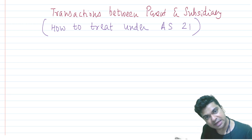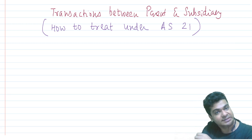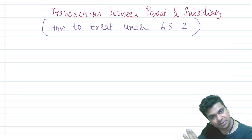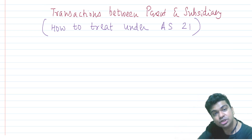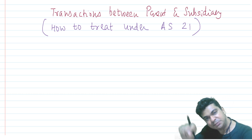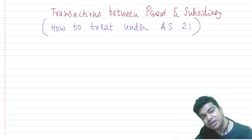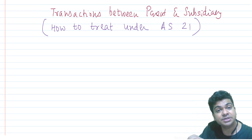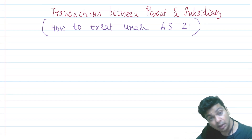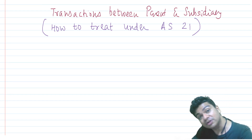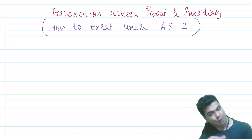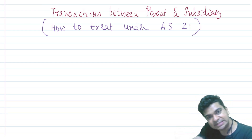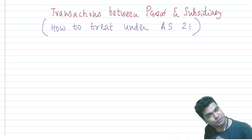When we say that parent and subsidiary is a single company, we ought to eliminate the transactions that have occurred between them. For example, the parent is selling goods to the subsidiary. The parent credits this as sales in its P&L and the subsidiary debits this as purchases in its P&L. But when preparing consolidated financial statements, parent and subsidiary are a single company — you cannot sell to yourself, so the sale and the purchases must both be eliminated.